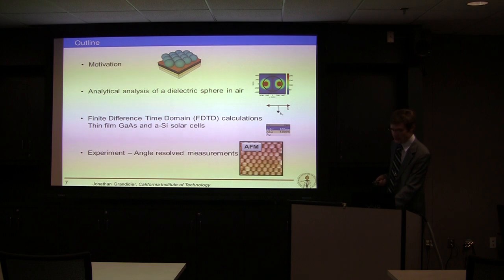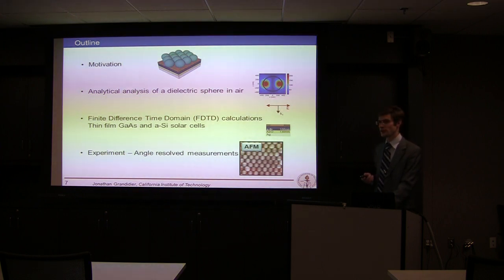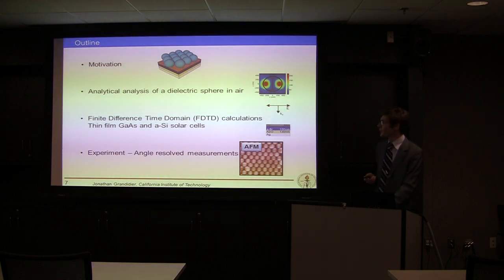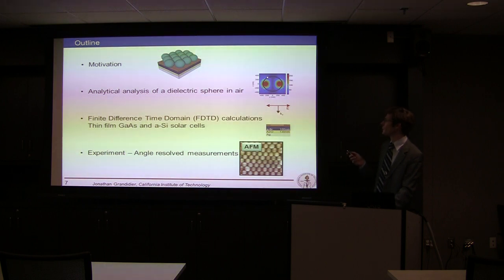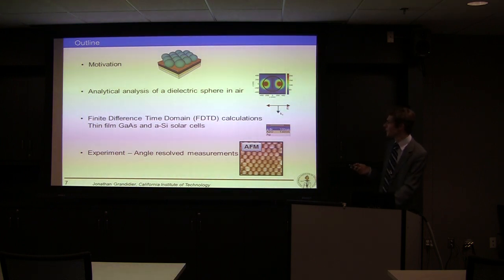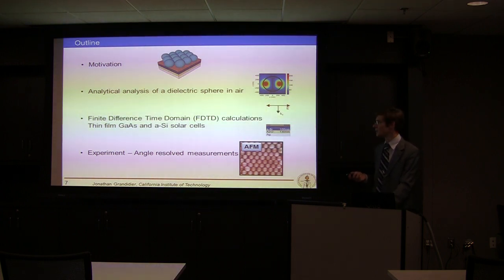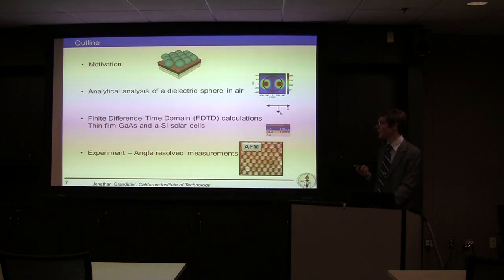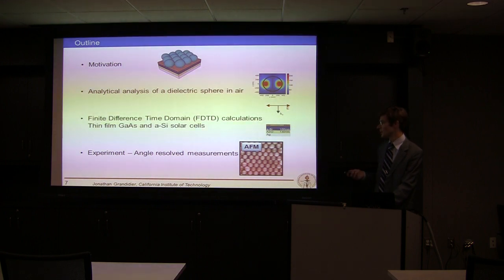Here is the outline of my talk. I will first show the motivation of using resonant dielectric structures. Then I will show some analytical calculation of a dielectric sphere in air — an example of analytically calculated eigenmodes. Then I will show how I simulated this structure using finite difference time domain calculations for both an amorphous silicon solar cell and a gallium arsenide solar cell. Finally, I will show some experimental work including angle-resolved measurements.